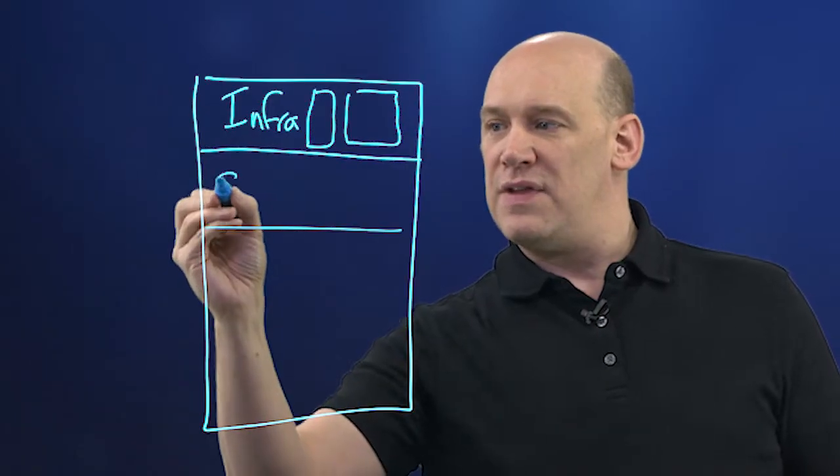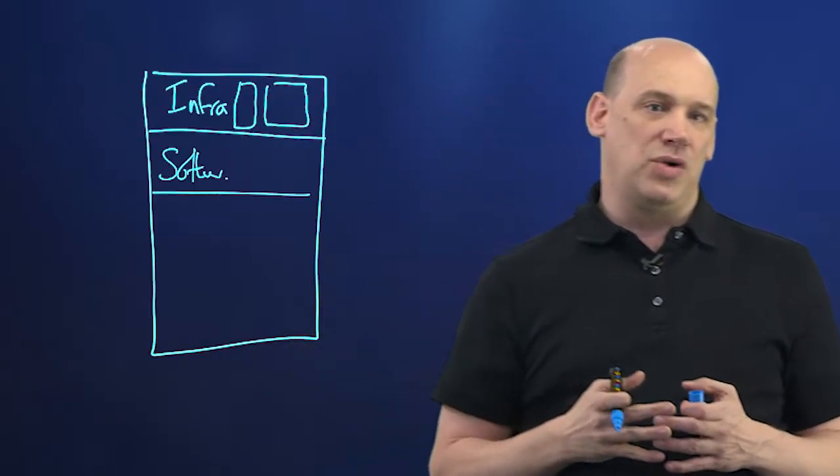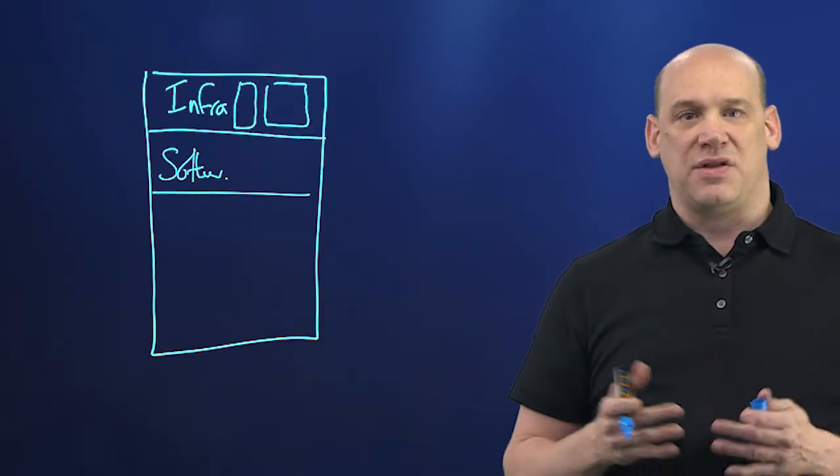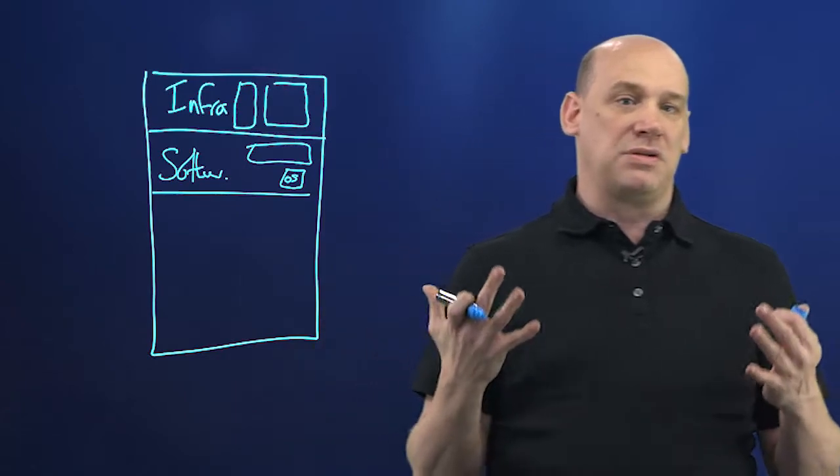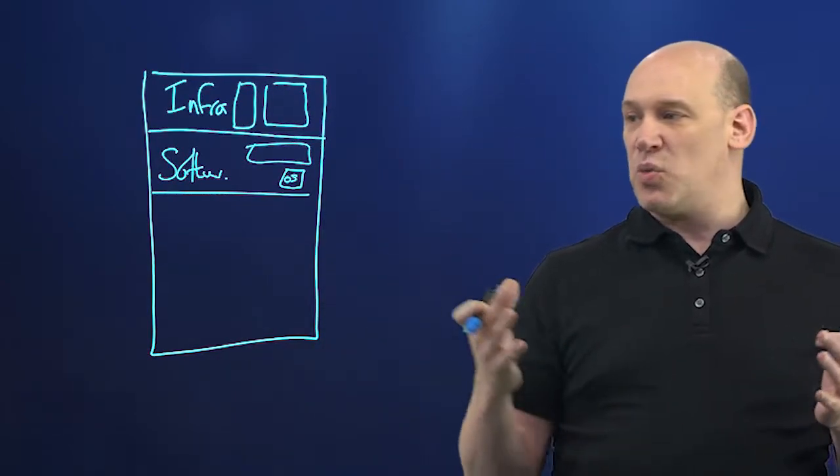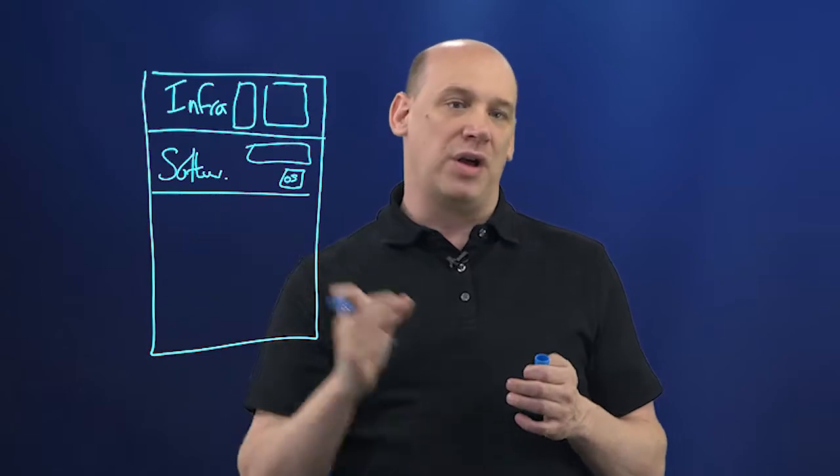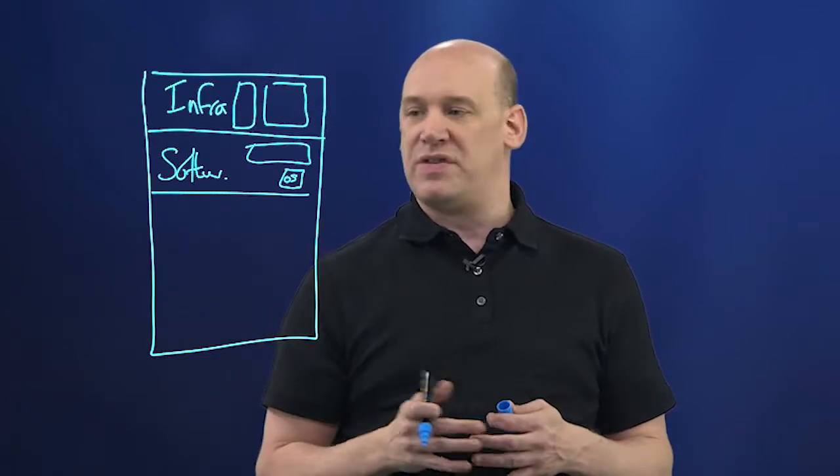Second, there's a software layer. This includes things such as the hypervisor, operating systems, and other software layer services that we need to be able to facilitate and run the desktop as a service.